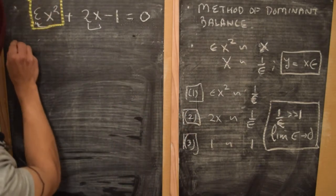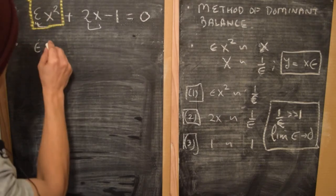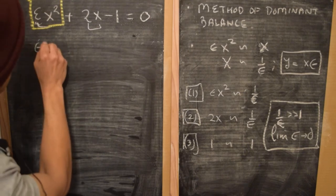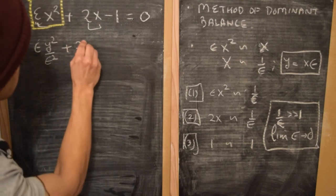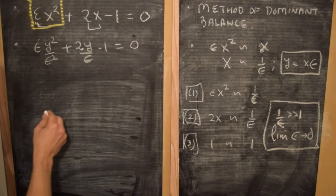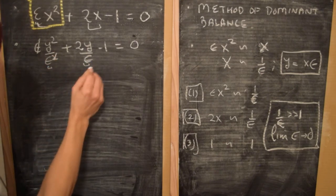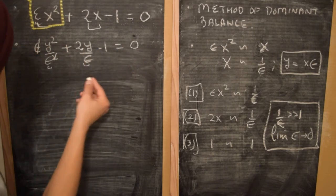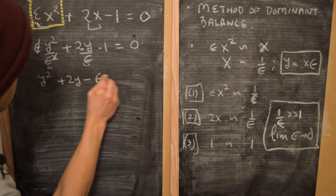If y is x times ε, then x is y divided by ε. Substituting gives us: ε times (y/ε)² + 2(y/ε) - 1 = 0, which is ε·y²/ε² + 2y/ε - 1 = 0. We can cancel one factor of ε in each denominator since ε is non-zero, and multiplying throughout by ε gives the equation y² + 2y - ε = 0.